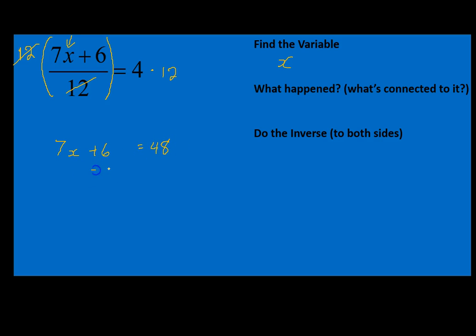Now I'm going to subtract 6 from both sides of the equation. Again, kind of peeling away layers so that I can get to my variable. 7x is equal to 48 minus 6, which is 42. And now I divide both sides by 7 for my final answer of x is equal to 6.